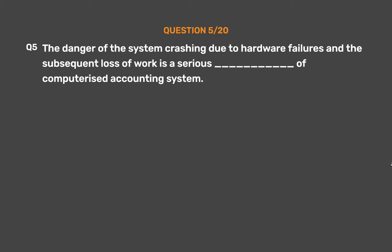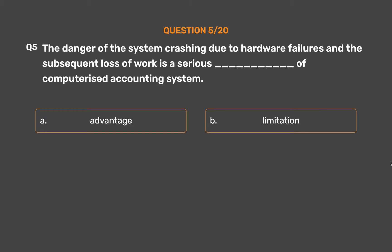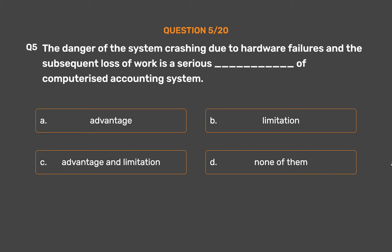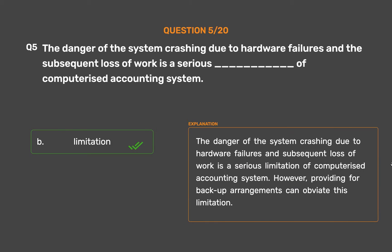Question number 5. The danger of the system crashing due to hardware failures and the subsequent loss of work is a serious underscore of computerized accounting system. Option A: Advantage. Option B: Limitation. Option C: Advantage and limitation. Option D: None of them. The correct answer is Option B — Limitation. The danger of the system crashing due to hardware failures and subsequent loss of work is a serious limitation of computerized accounting system. However, providing for backup arrangements can obviate this limitation.